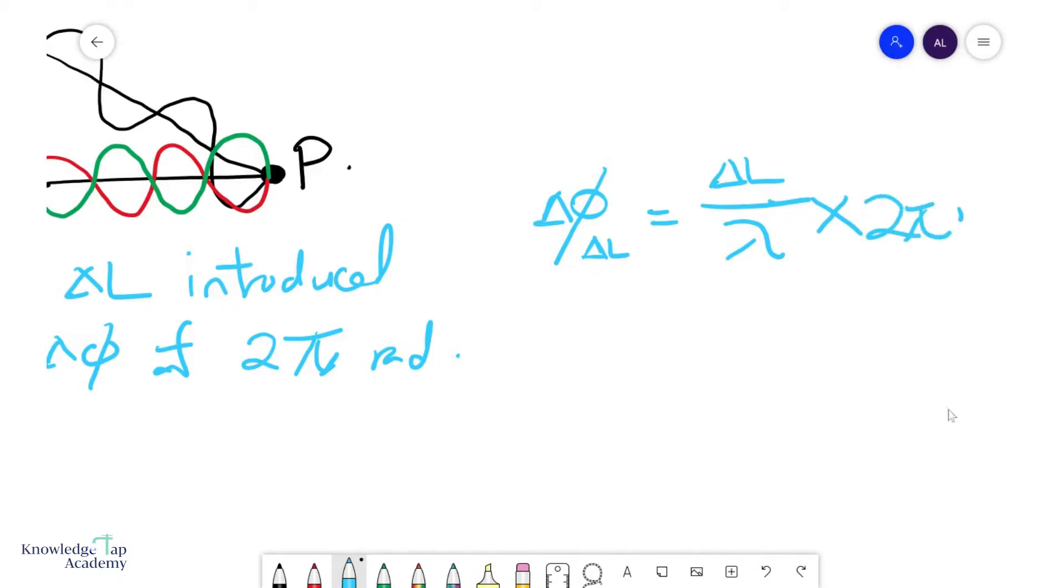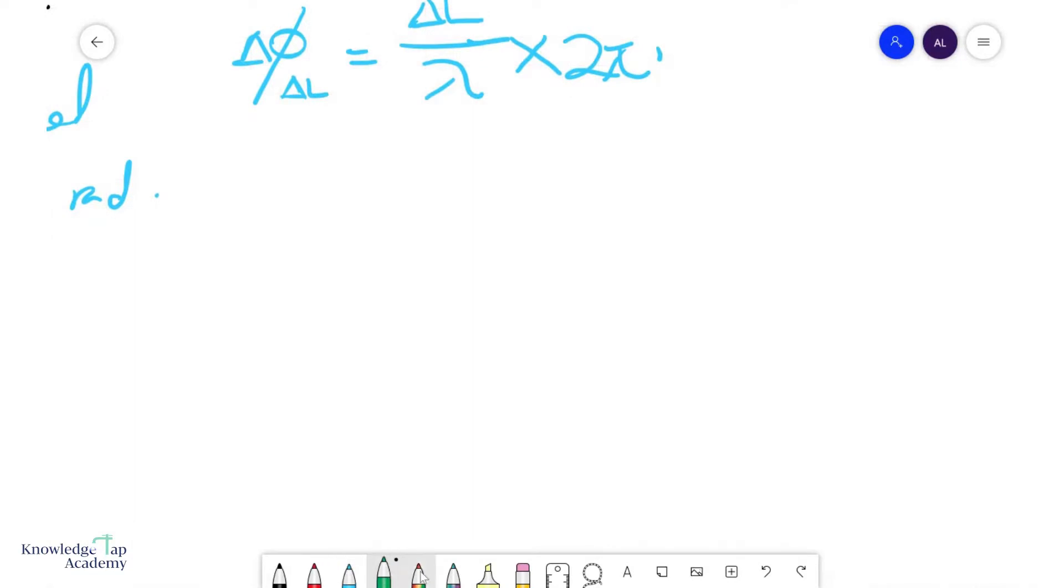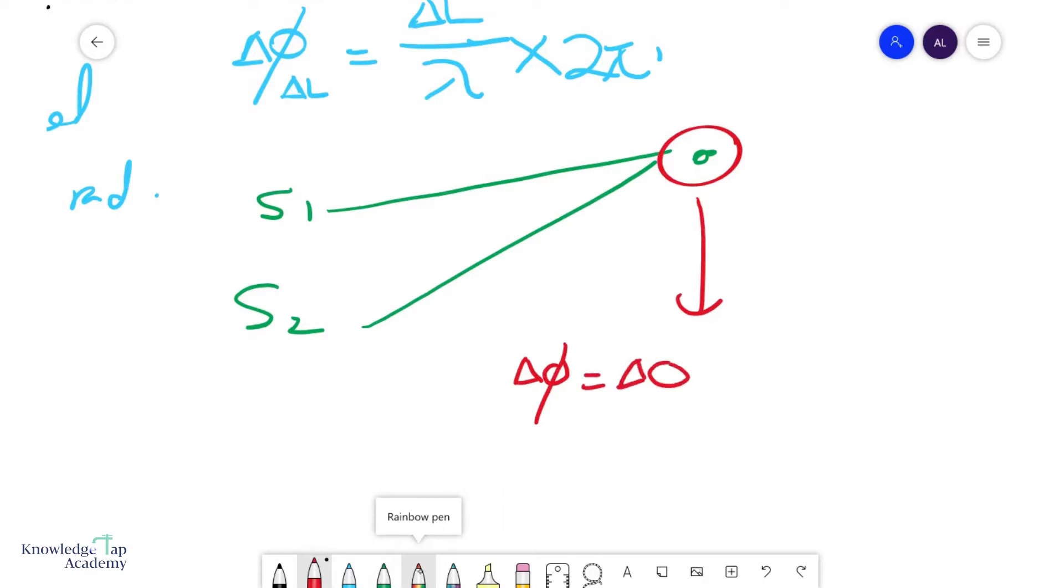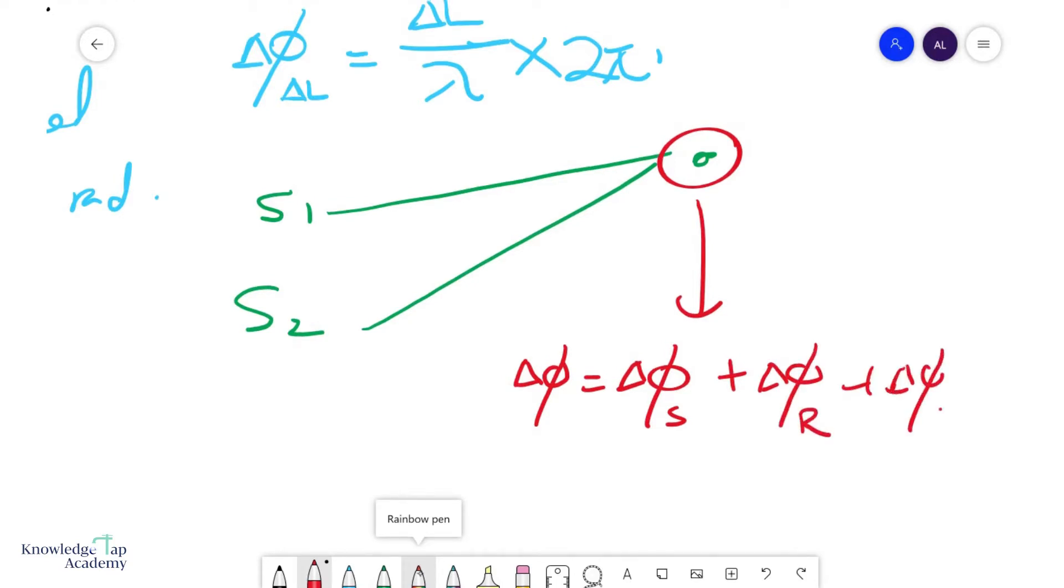So to summarize, if I have two sources, S1, S2, and they want to meet at a point over here, the total phase difference at this point is due to three separate things, number one, the phase difference at the source, plus the phase difference due to the number of reflections, plus the phase difference due to the path difference.